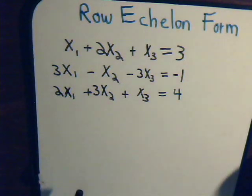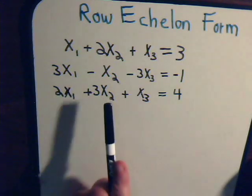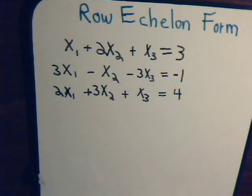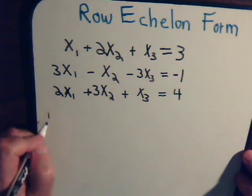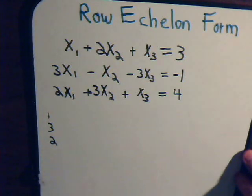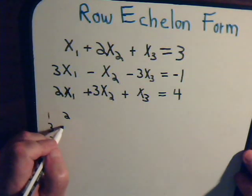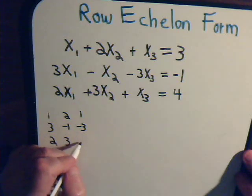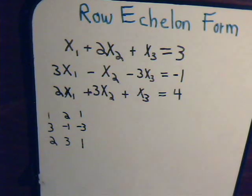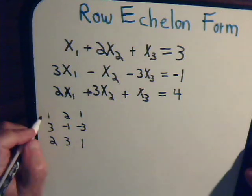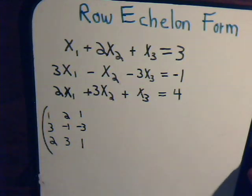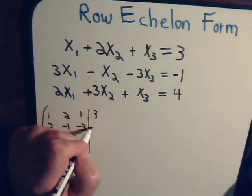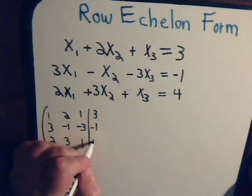We take the coefficients of the different columns — the x1, x2, and x3 columns — and make a matrix with them. So we'll have 1, 3, 2 from x1; 2, negative 1, 3; and 1, minus 3, 1 from x3. We also include the right-hand side numbers to make the augmented matrix: 3, minus 1, 4.